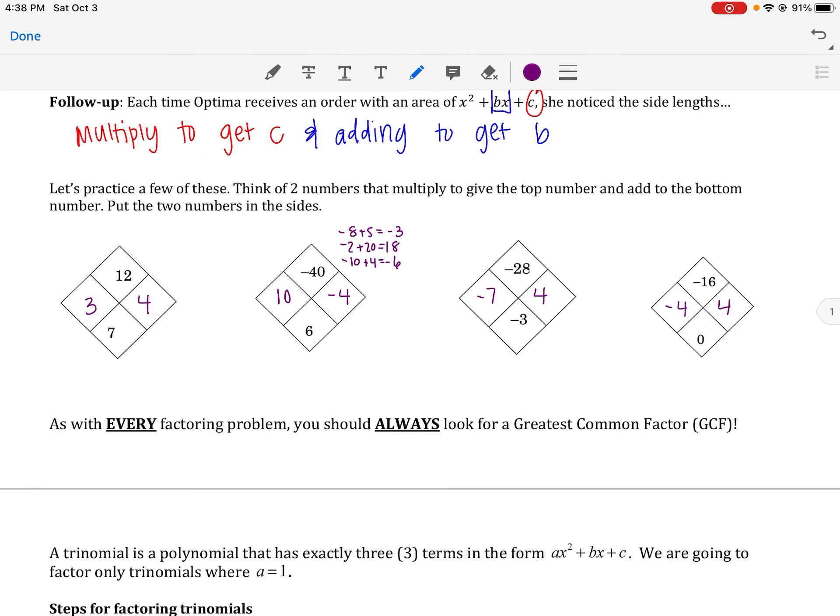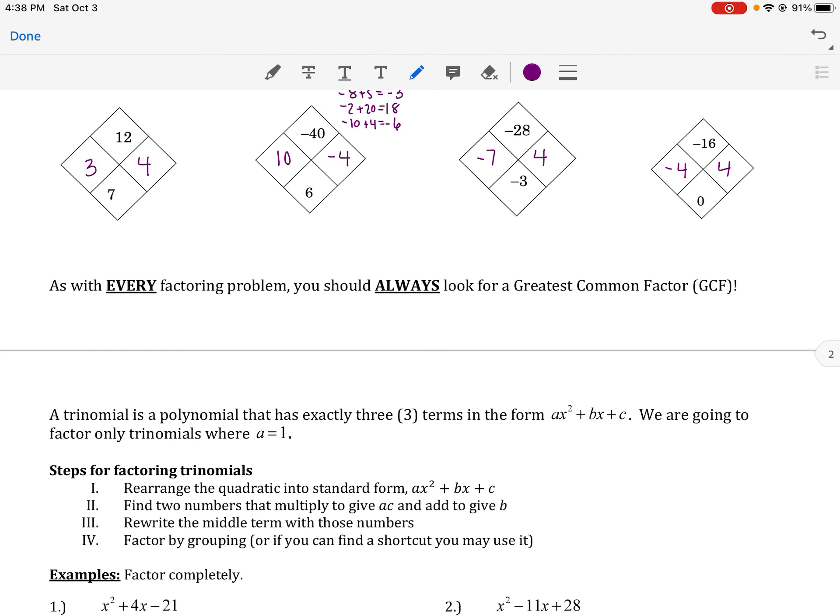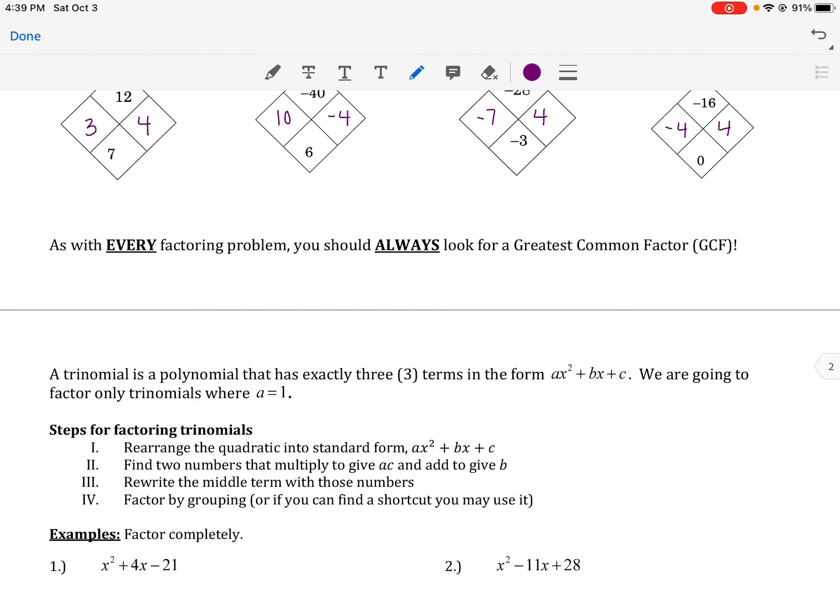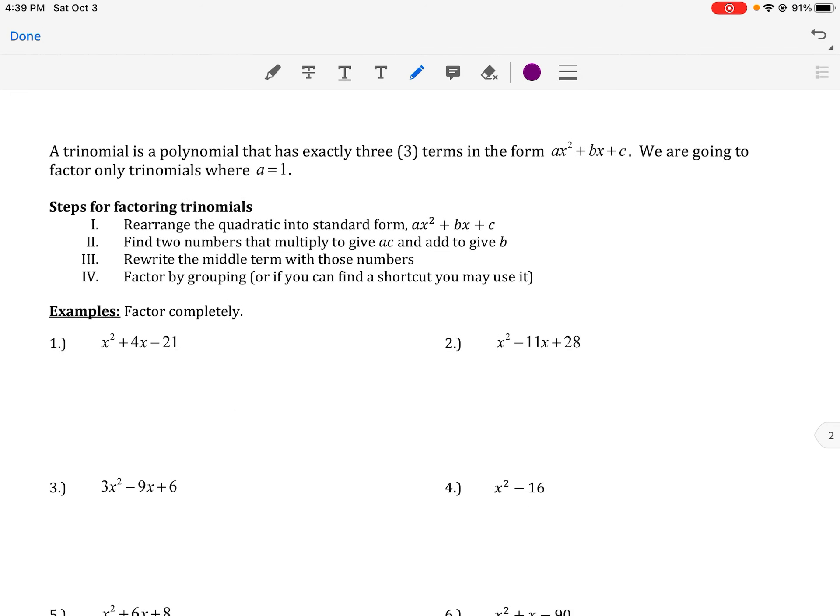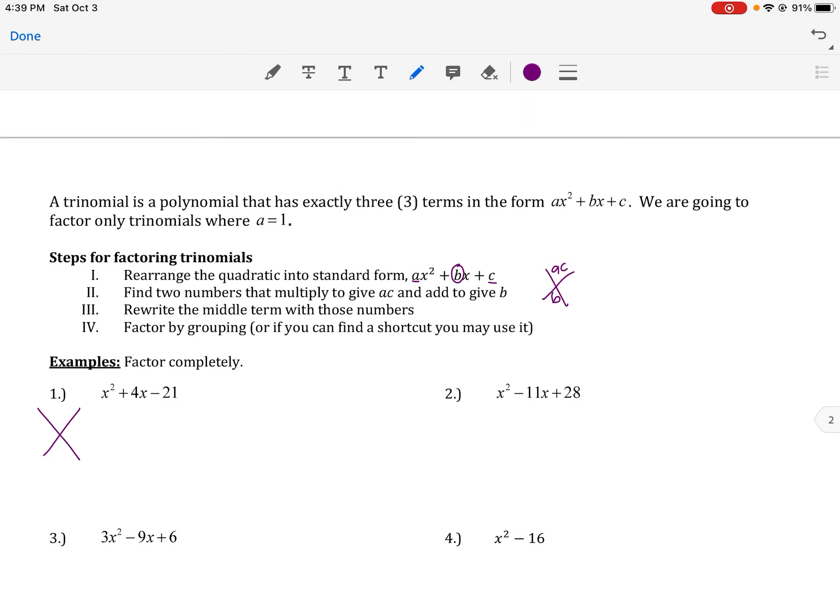As with any factoring problem, always look for a GCF, a greatest common factor, before you do it. So today we're going to look at trinomials, which is a polynomial that has exactly three terms. We are going to factor trinomials where A is 1. If you like the steps, you can draw the picture, or you can say rearrange it into our standard form ax squared plus bx plus c. We want to give two numbers that multiply times a times c, so that's the a and the c, and add to b, so add to the middle number. Then we're going to rewrite those middle terms and do our factoring by grouping. I usually draw it as a little x, just like this little diamond.